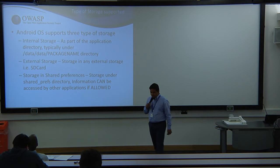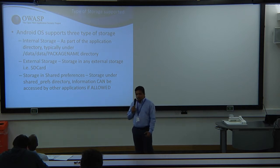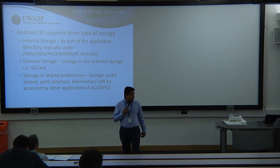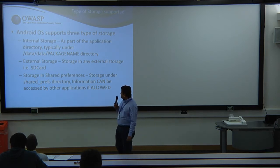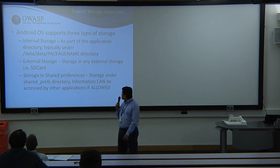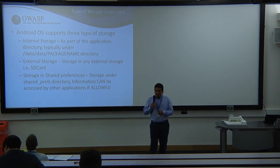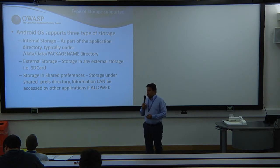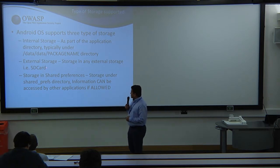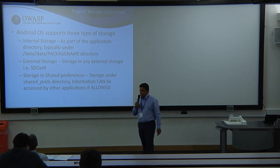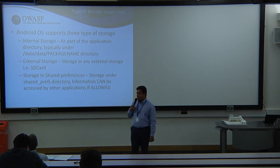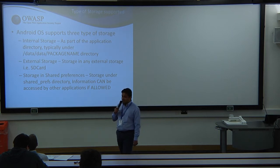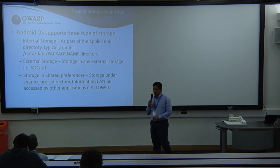In terms of how to review Android applications: Android natively supports three types of storage — internal storage (within the data directory), external storage (the SD card), and shared preferences, which is a file that can be shared with different applications if they have the appropriate permission.